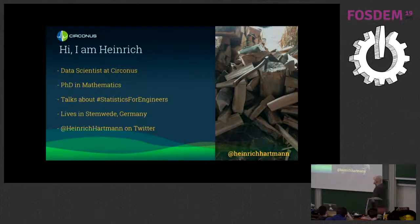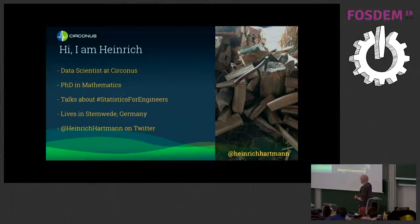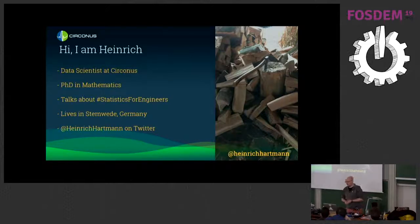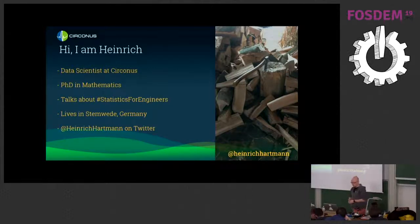A bit more about me: my name is Heinrich. I'm a data scientist at Circonus. I originally come from mathematics and recently I've been talking a lot about statistics for engineers — entering the IT operations and monitoring domain, discussing what percentiles are and how to apply them correctly. I moved to the countryside in Germany so I can chop more firewood, and I'm @HeinrichHartmann on Twitter.